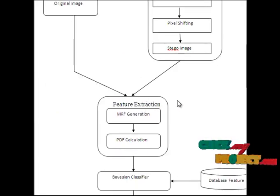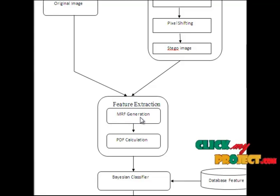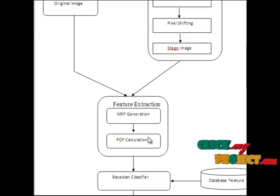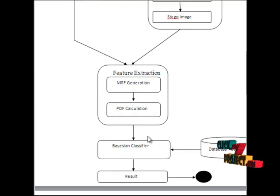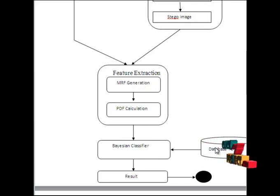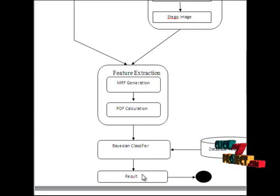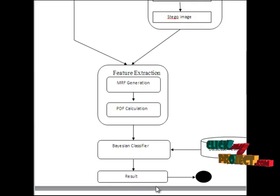In feature extraction, the image is given to the Markov Random Field generation. The given input image identifies the MRF values. The generated values are passed to the PDF calculation — probability density function. The generated PDF values are taken as feature values, which are given to the Bayesian classifier. The Bayesian classifier is trained based on the original input image features alongside the stego image features, and it predicts whether the image is original or stego.